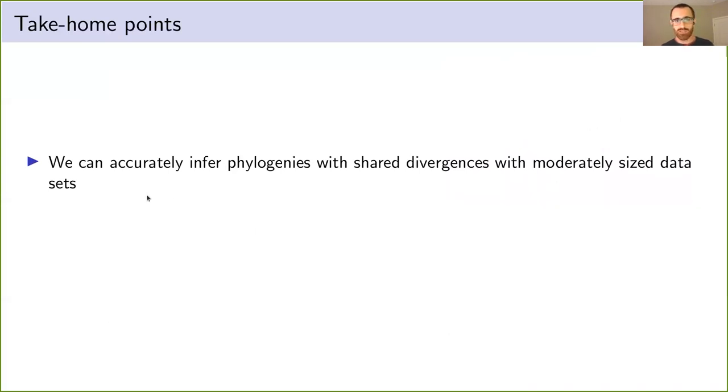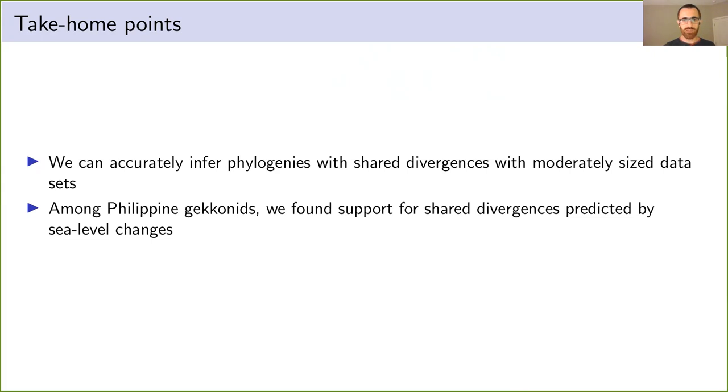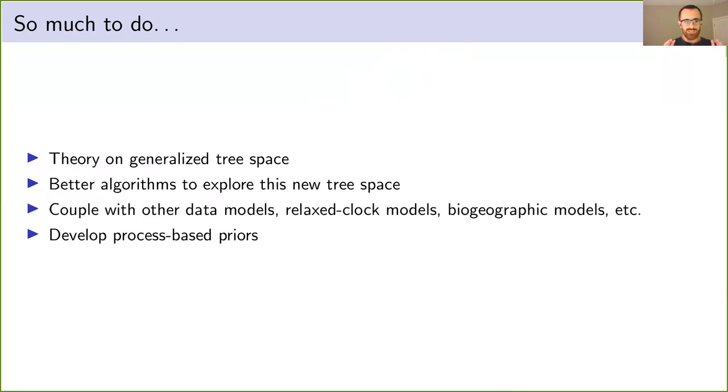Okay. So take-home points very quickly. The new approach seems to infer phylogenies with shared divergences quite well, even with moderate-sized data sets. And there doesn't seem to be much of a cost to using it. It's got good MCMC mixing and convergence and does well, even if there aren't shared divergences. And when we applied it to the Philippine gecko clades, we find support for shared divergences as predicted by sea level changes. This is just scratching the surface. There's so much to do here. So if you're interested in this, just let me know.